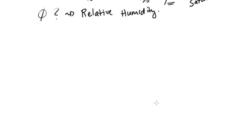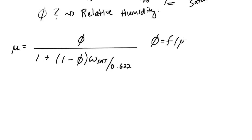Let me remind you what we came up with in the last video. We came up with mu is equal to this fractional statement with relative humidity over 1 plus 1 minus the relative humidity times, actually it's not times omega, that's omega saturation divided by 0.622.